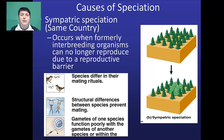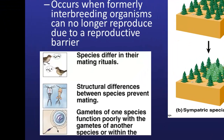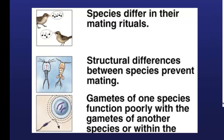The second type is sympatric speciation, which occurs when formerly interbreeding organisms can no longer reproduce as a result of a reproductive barrier. Sympatric means together or same, and patria refers to country — so they're right next to each other but something prevents them from reproducing. This could be a change in mating rituals or mating timing, where one organism reproduces in the morning and another at night. There could also be structural differences between species that prevent mating, or the sperm and egg may no longer be compatible — all acting as reproductive barriers.